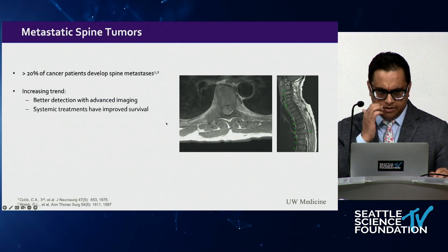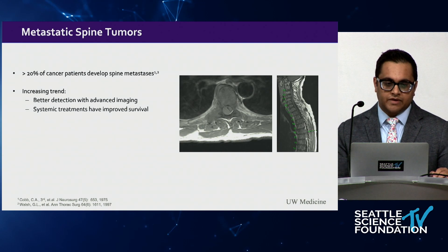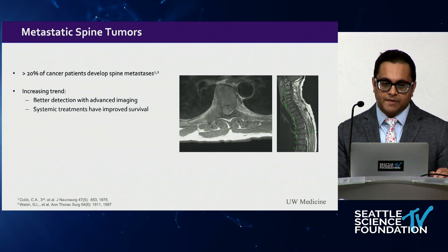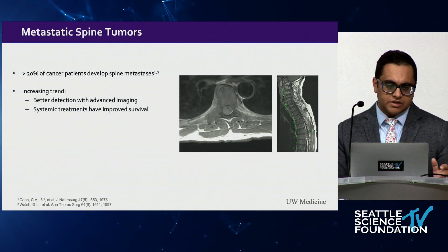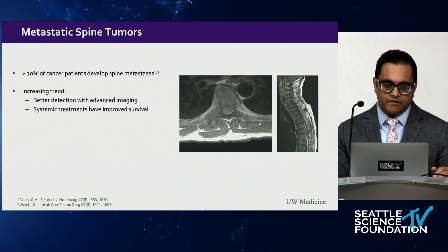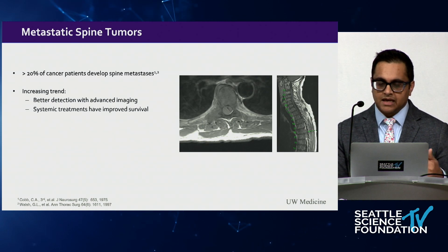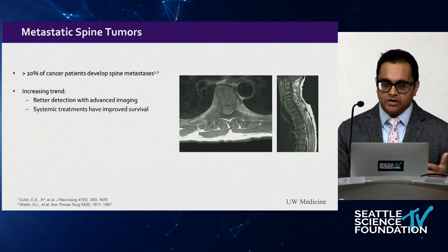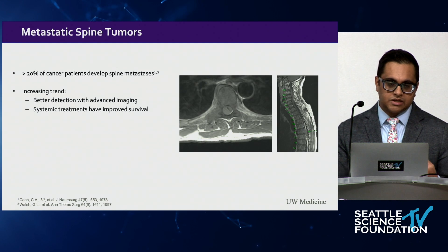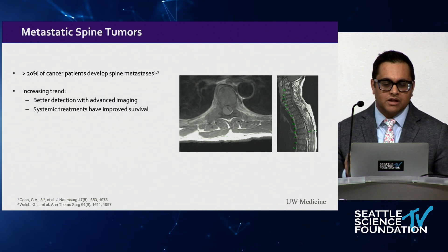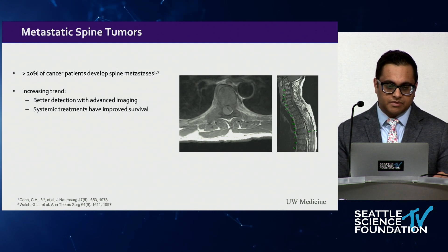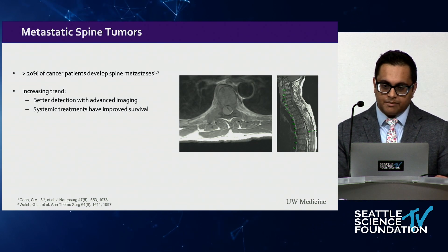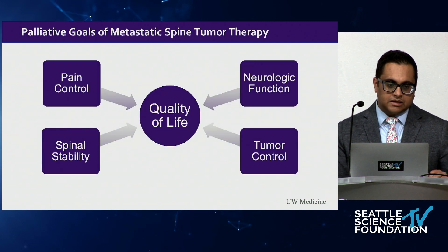As we all know, greater than 20% of cancer patients eventually develop spinal metastases, and this trend is increasing. We now have better methods of detecting cancers through advanced imaging and improved systemic treatments, so patients are surviving longer. Many newer agents may not penetrate through bone as well as through the rest of the bloodstream and visceral organs, so we're seeing more bony disease.